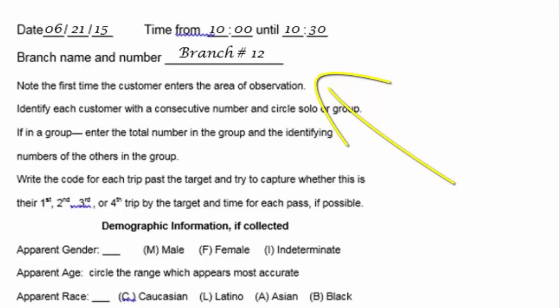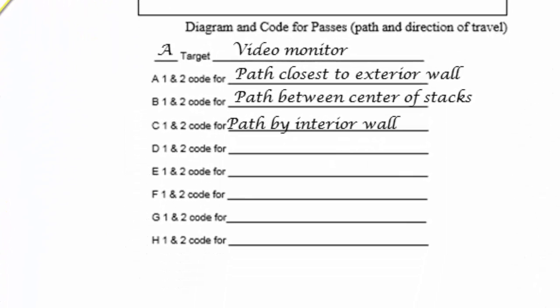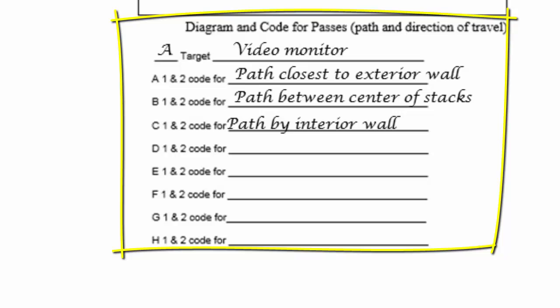The location code will be established by the project manager. The parameters of the observation area should be established and sketched into the box provided on the sheet with appropriate detail, such as the location of doors, shelves, etc., as well as indicating the position of the observer and the location of the observational target, as well as potential pathways people may use as they pass by the target. Use the lines below the diagram to designate the path associated with each of the codes. For consistency of recording the data, ensure that each observer is using the same map parameters and the same code.